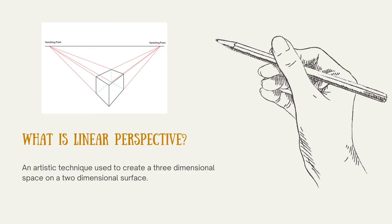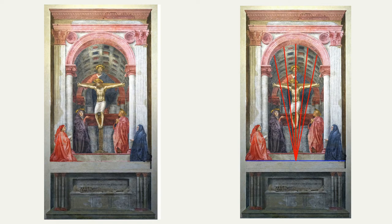One of the best examples of this innovation is called the Holy Trinity, and it was painted by Masaccio. Created in 1427 for the Church of Santa Maria Novella, art historians have long used it as a representation of the shift that the Italian Renaissance brought about.